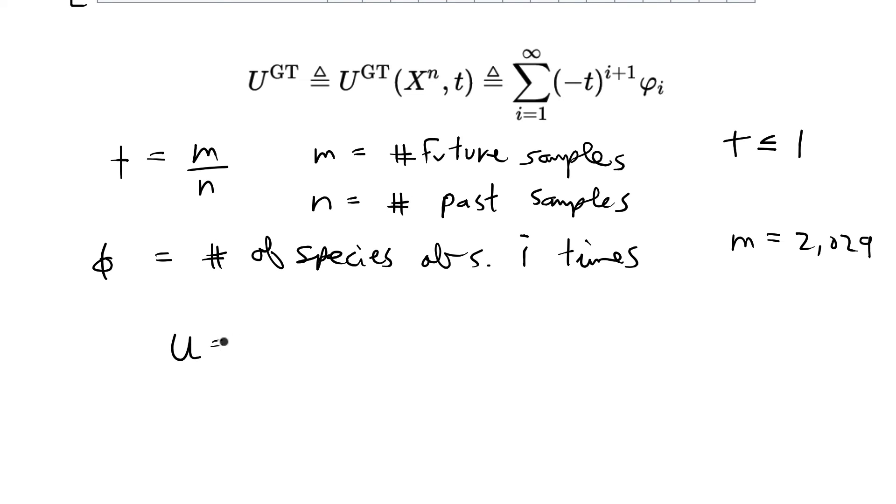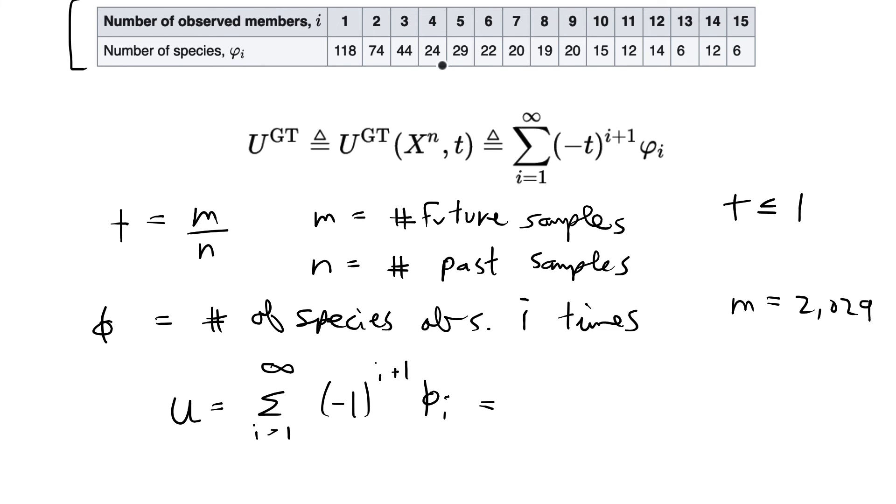So our estimator u for the number of unseen species is going to be equal to the sum of i from 1 to infinity of negative 1 to the i plus 1 times phi sub i. Using our data table that we have, that's going to be equal to, for i is equal to 1, we're going to have negative 1 to the 1 plus 1, which is 2, times phi. So we observe 118 species one time, so phi is going to be 118 plus, now we're going to go to i equal to 2. So when i is equal to 2, we're going to have negative 1 to the 3rd times 74.